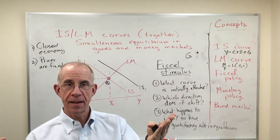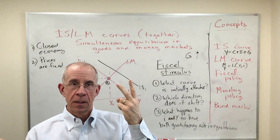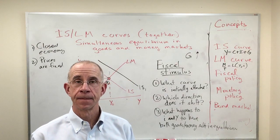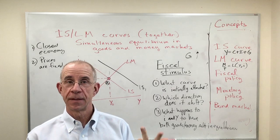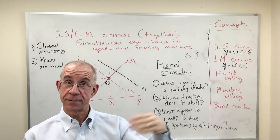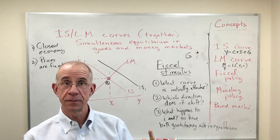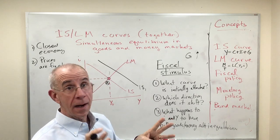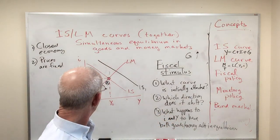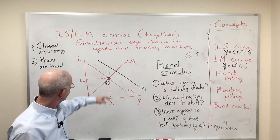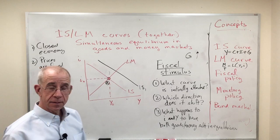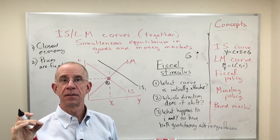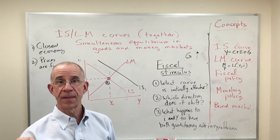One of two things has to happen. Interest rates have to go up, which will dampen investment. That crowding out effect that we've talked about before, or output's got to go up. So at this point A now represents a point of excess aggregate demand for goods and services.